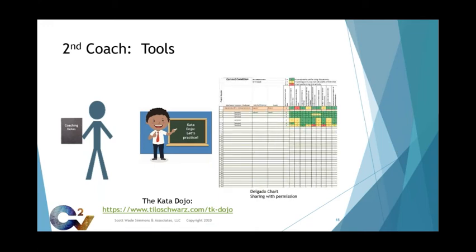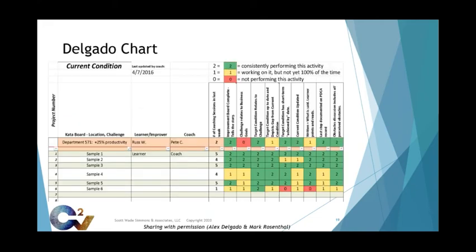Lastly, here's a chart called the Delgado chart created by Alex Delgado and Mark Rosenthal to assess how skill development was progressing in Alex's organization. Let's look at a larger version of that chart. I really like this chart. On the left side, the different challenges are noted, followed by identifying the learner and coach. They use three colors and three numbers, where green, number two, means the activity is consistently being performed. Yellow, number one, means the activity is being worked on but isn't yet consistent. And red, number zero, means the activity is not being performed at all.